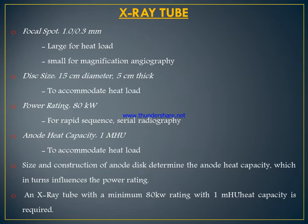The X-ray tube is used for generating X-rays. It has a focal spot of 1.0, 1.2, or 0.3 mm, with a large heat load and a small size for magnification angiography. Disc size is about 15 cm in diameter and 5 cm thick to accommodate heat load. Power rating is about 80 kilowatts for rapid sequence and serial radiography. Anode heat capacity is 1 MHU.